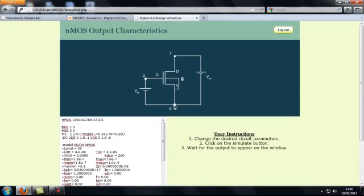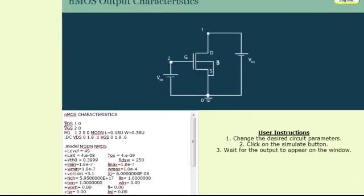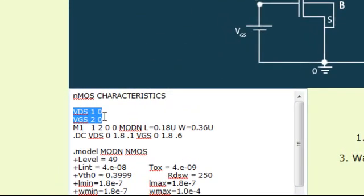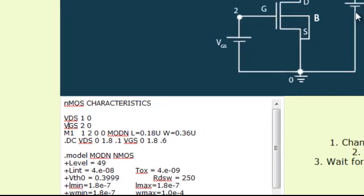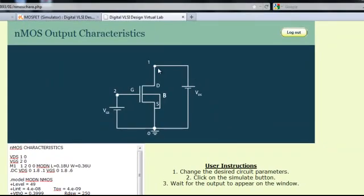If you look at the NG-SPICE program, the first two lines define the voltage sources required to set up this output characteristics experiment. VDS corresponds to the voltage source supplied between node 1 and 0, as defined in the first line.